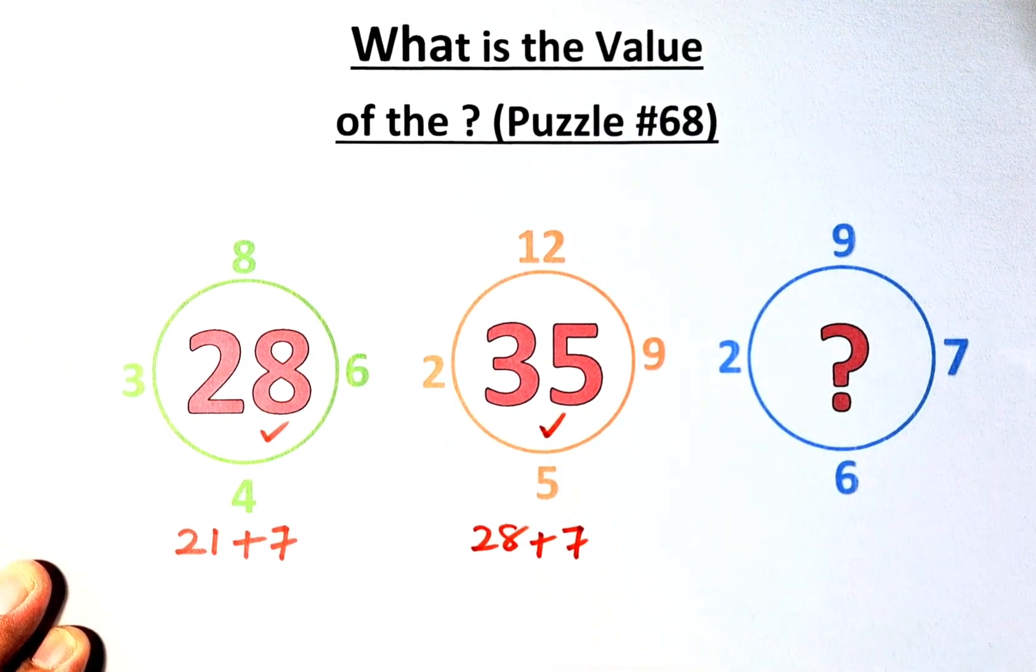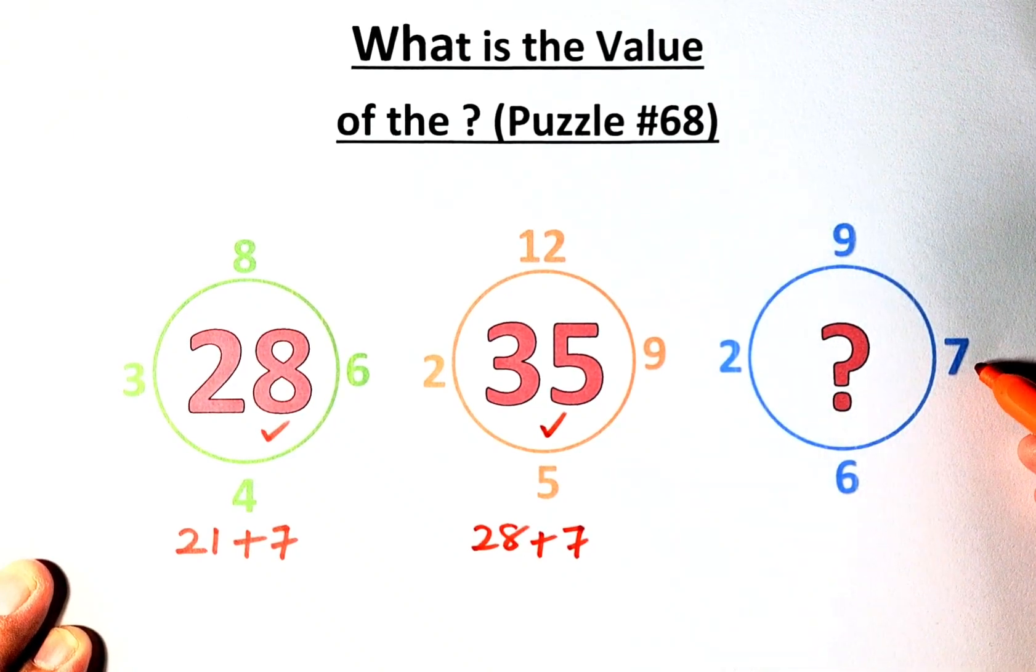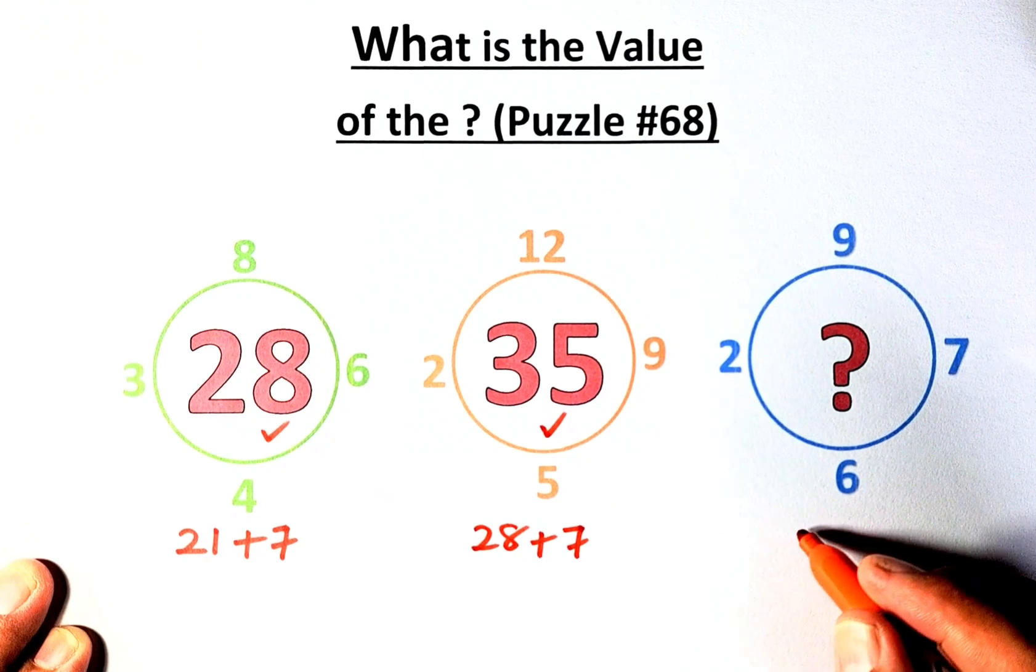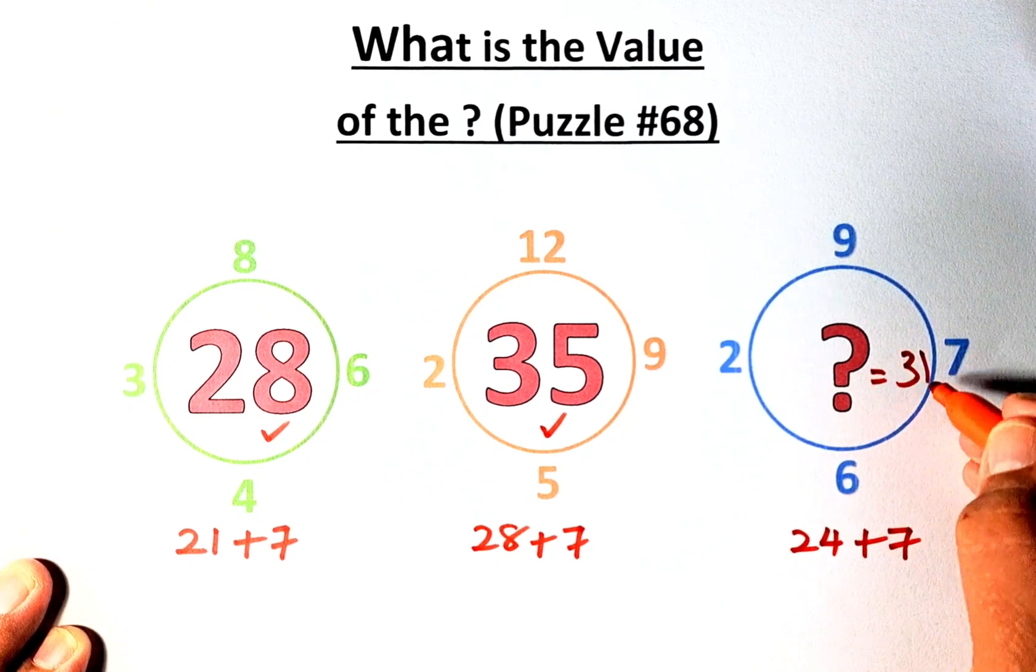Finally, you get 2, 9, 7, 6. So 2 plus 9 is 11. 11 plus 6 plus 7 is 13. So 11 plus 13 is going to be 24. And you need to add 7 to the answer. And the question mark is equal to 31.